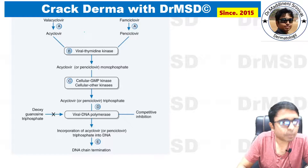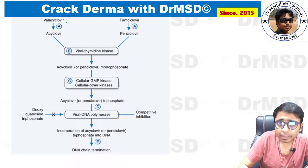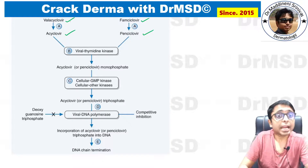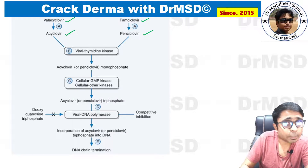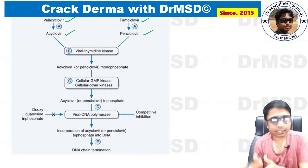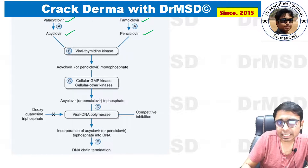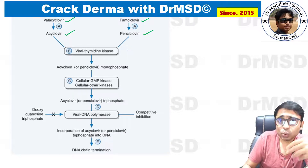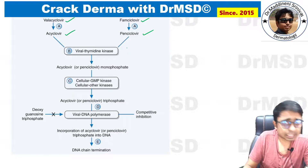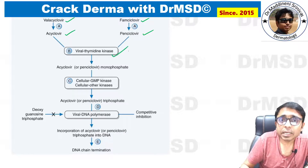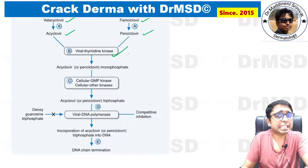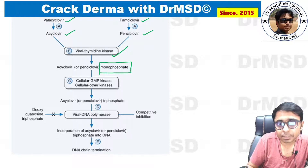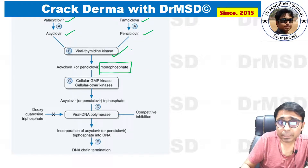So now let us see what is the mechanism of action of these medications. The antiviral medications against herpes are valacyclovir, acyclovir, famciclovir and penciclovir. Valacyclovir and famciclovir are the prodrugs of acyclovir and penciclovir. When these antiviral medications are taken by a human, they reach the viral cells, and in the virus the thymidine kinase converts these medications into their respective monophosphates. This step happens in the virus.